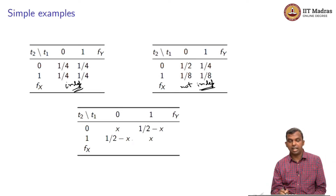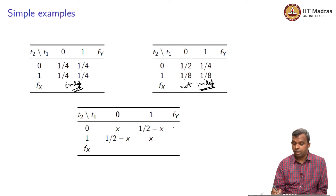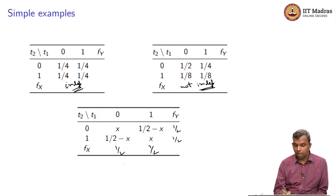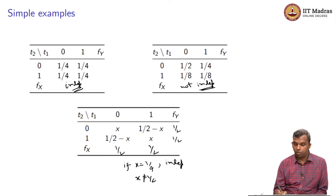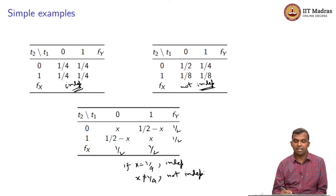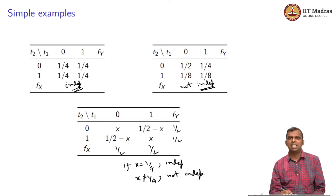In a more general 2×2 case with a parameter x, if the marginals all come out to 1/2, then by calculation, independence holds if and only if x = 1/4. If x is not equal to 1/4, the variables are dependent.